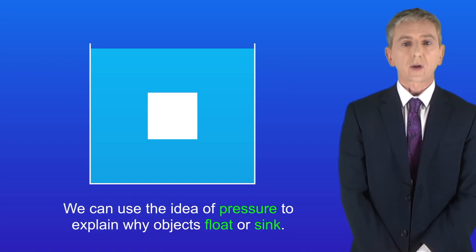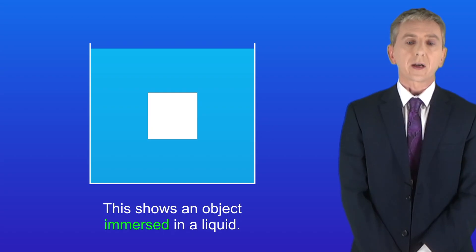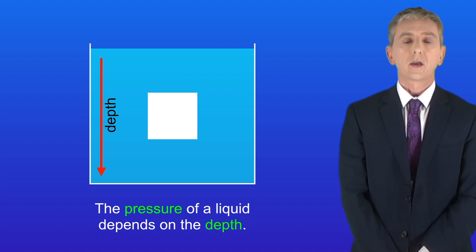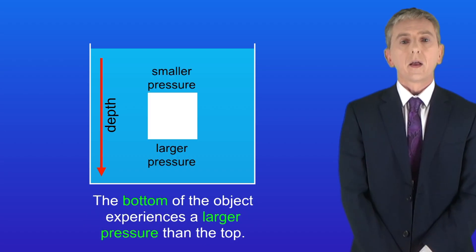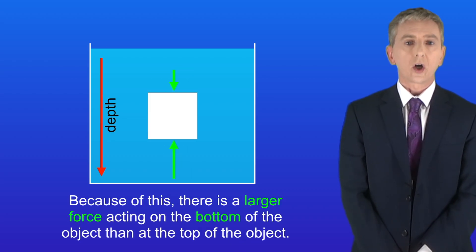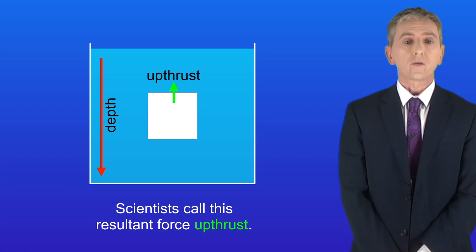We can use the idea of pressure to explain why objects float or sink, by looking at the idea of upthrust. I'm showing you here an object immersed in a liquid. The pressure of a liquid depends on depth, so the bottom of the object is at a greater depth and experiences a larger pressure than the top. Because of this, there's a larger force acting on the bottom than the top — in other words a resultant force acting upwards, which scientists call upthrust.